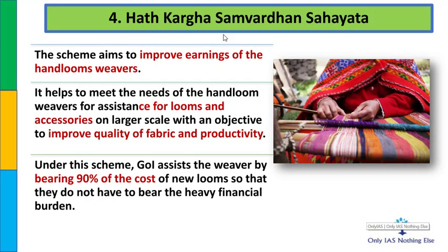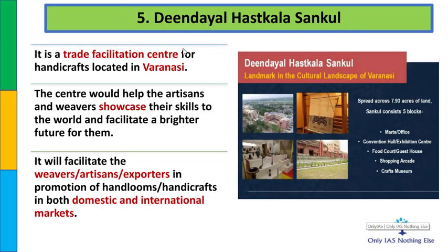चौथा scheme है हथकरघा संवर्धन सहायता. जो भी handloom weavers हैं, हाथ से weave करने का काम करते हैं, उनकी earning improve करने के लिए यह scheme चलाई गई है. Looms और accessories काफी महंगे आते हैं, तो यह scheme handloom weavers को बहुत सस्ते दामों पर handlooms और accessories provide करती है, जिसके basis पर वो fabrics की quality और productivity increase कर सकें. Government of India इन handlooms की cost का 90% bear करती है, जिससे इन पर कोई भी financial burden न पड़े.